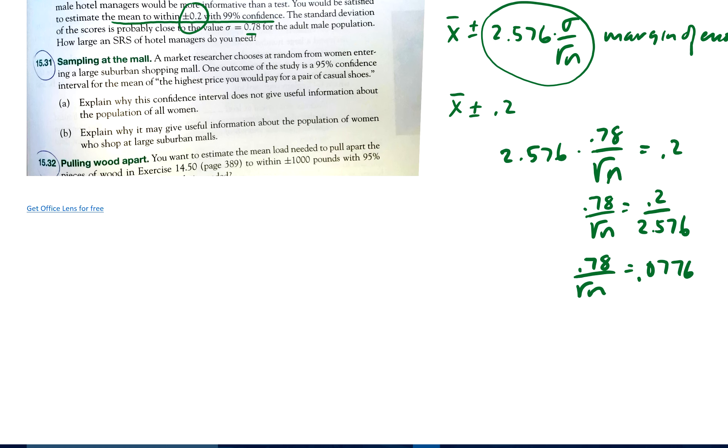Now I'm going to multiply by the square root of N. 0.78 equals 0.0776 times the square root of N. Now I've actually left this whole number in my calculator. I'm going to divide both sides by it now.